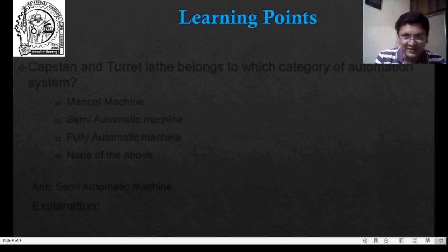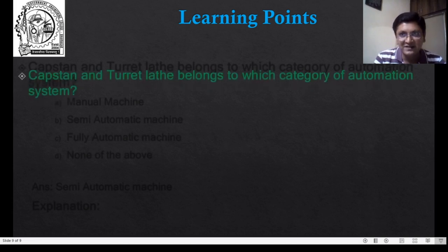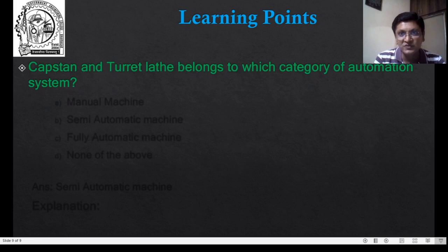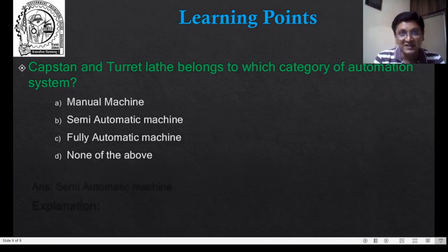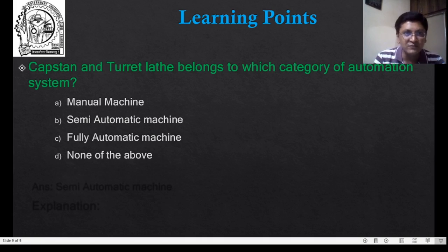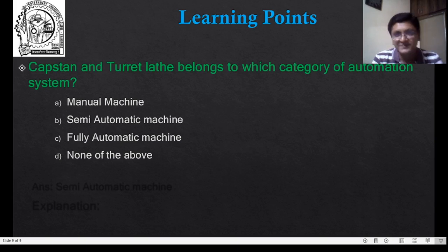Be ready for the question. Capstan and turret lathe belongs to which category of automation system? Your choices are: A) manual machine, B) semi-automatic machine, C) fully automatic machine, and D) none of the above. You have 5 seconds to think. The answer is semi-automatic machine.